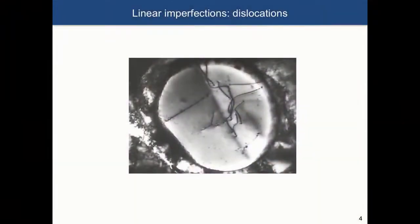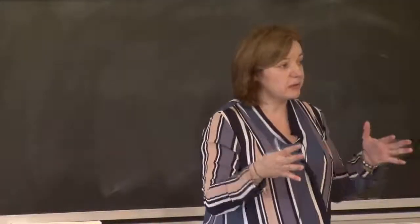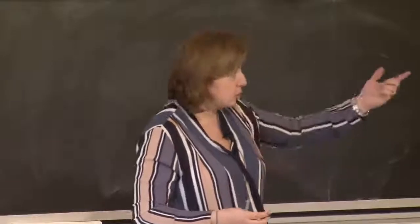Another TEM image shows dislocations in a metal. The reason we see these lines is that the strain around the dislocation is so significant that when you image using electrons, they are scattered dramatically differently in the perfect crystal region versus around the defect. If you wanted to image a point defect, that would be impossible using this type of imaging because the strain around it is so small.